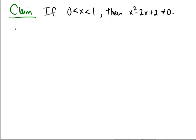Before we start our proof, let's provide some discussion. Let's try to understand what this is saying. This is an if-then statement with an antecedent of 0 < x < 1, and a consequent of x² - 2x + 2 ≠ 0.